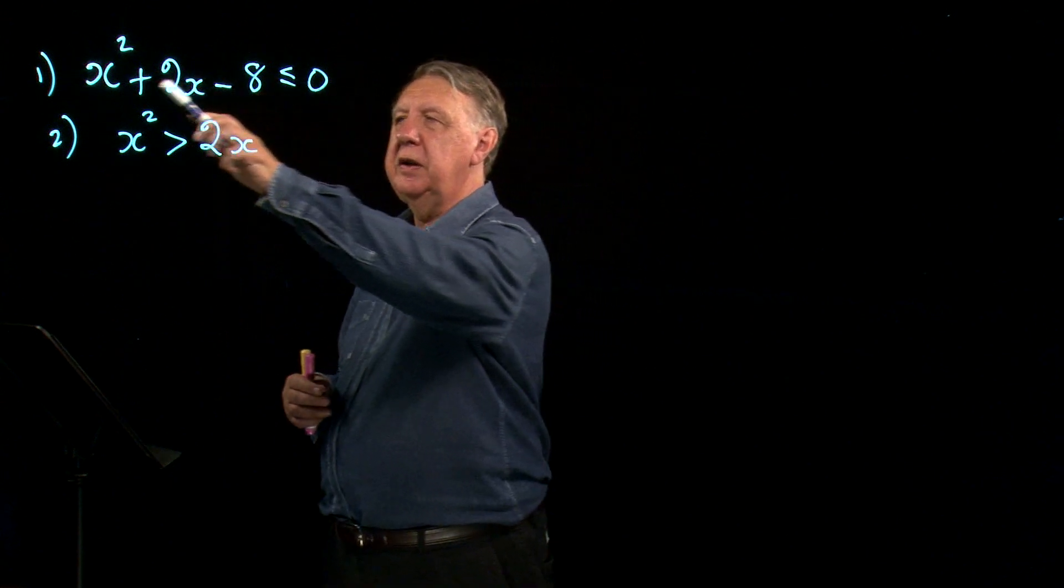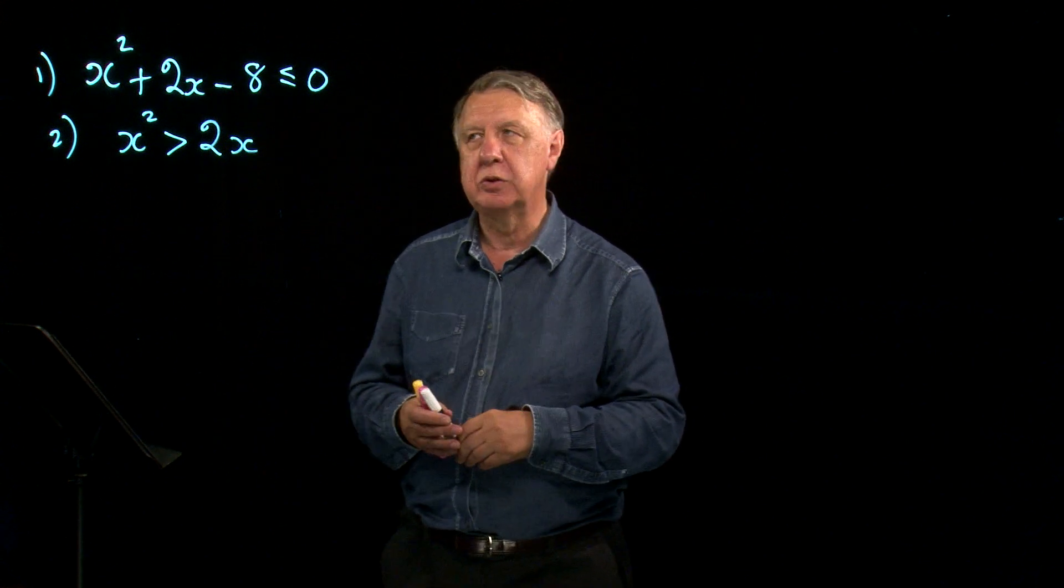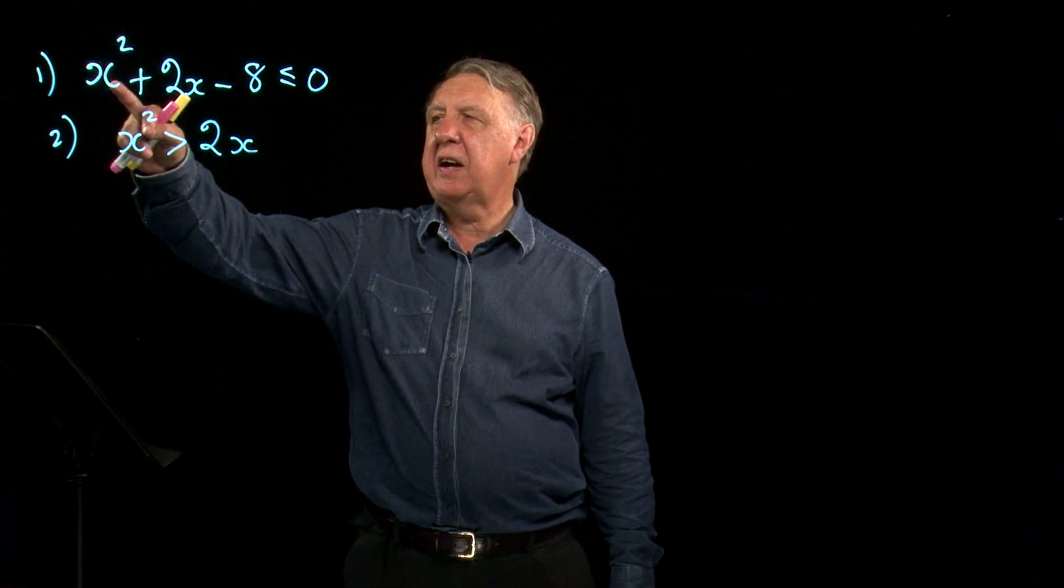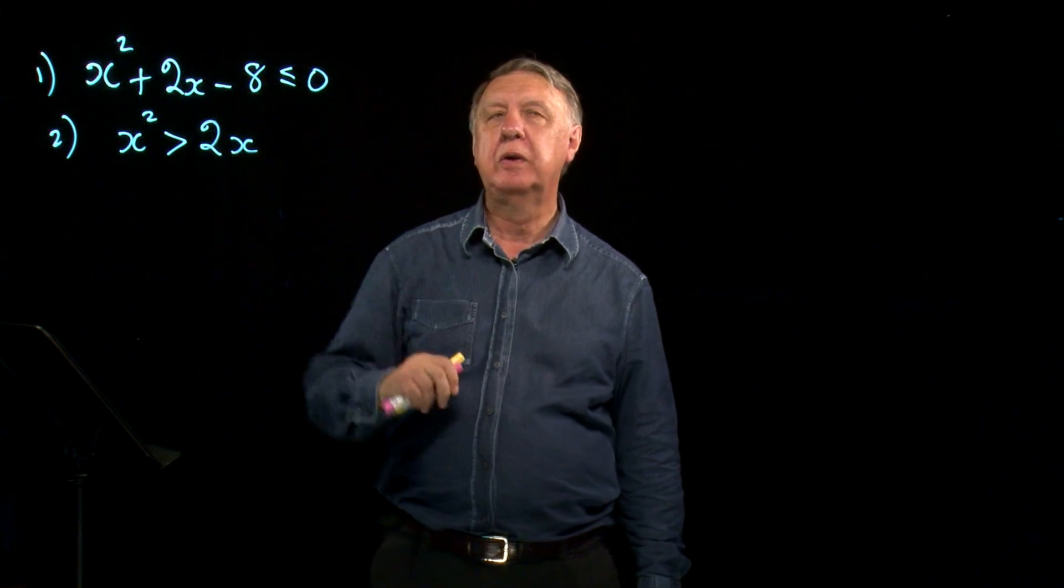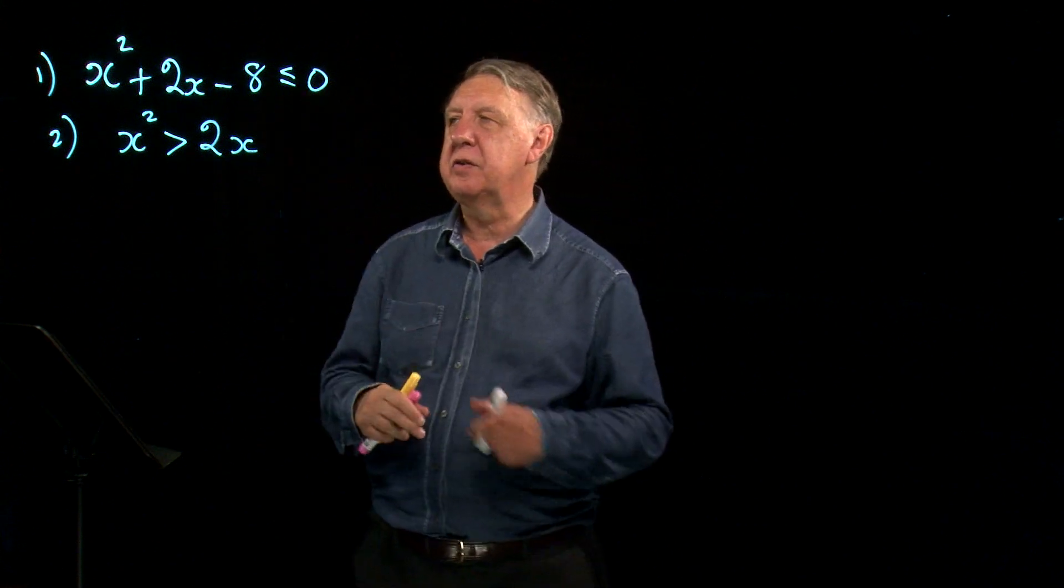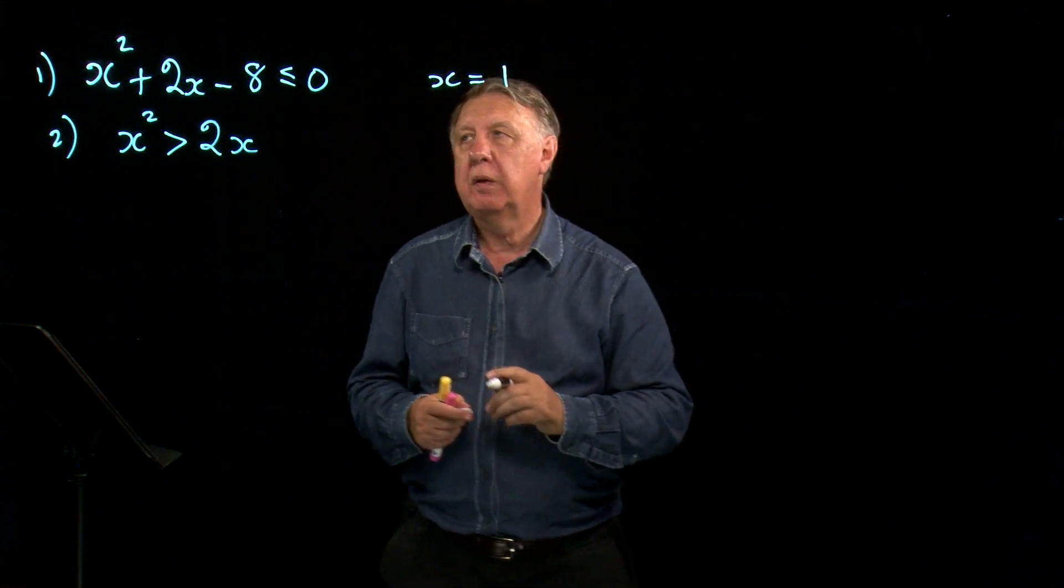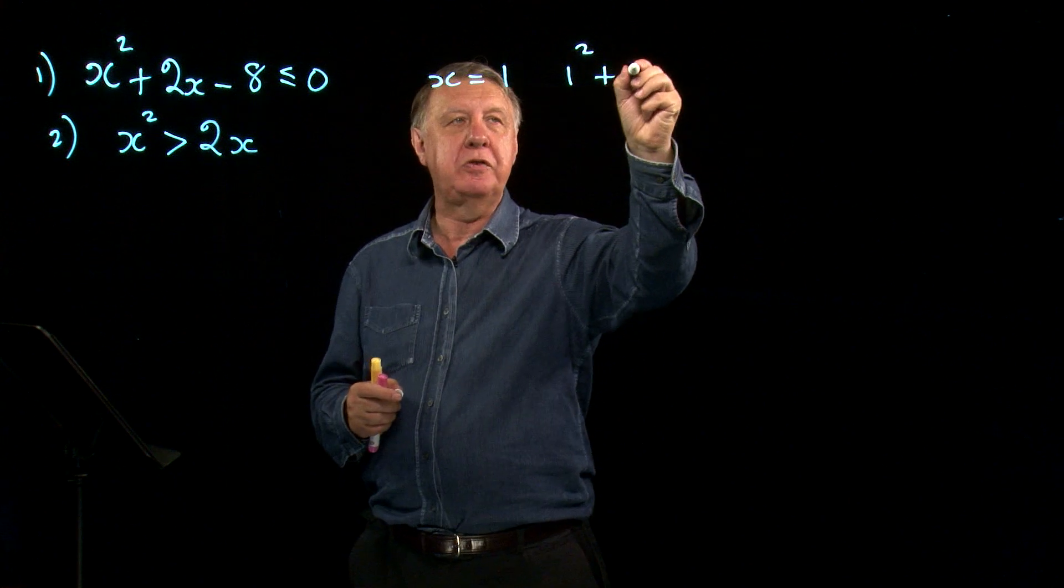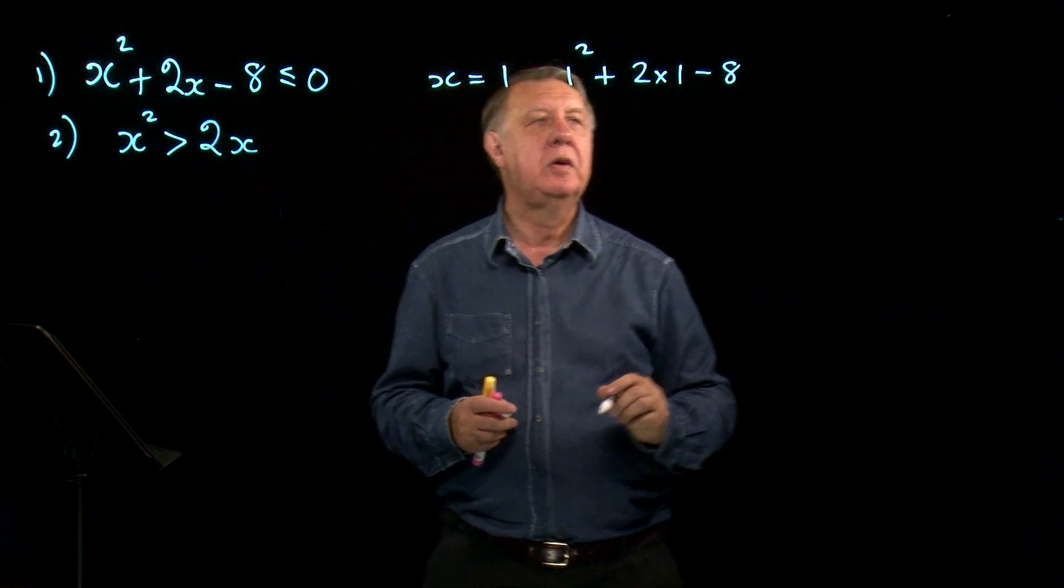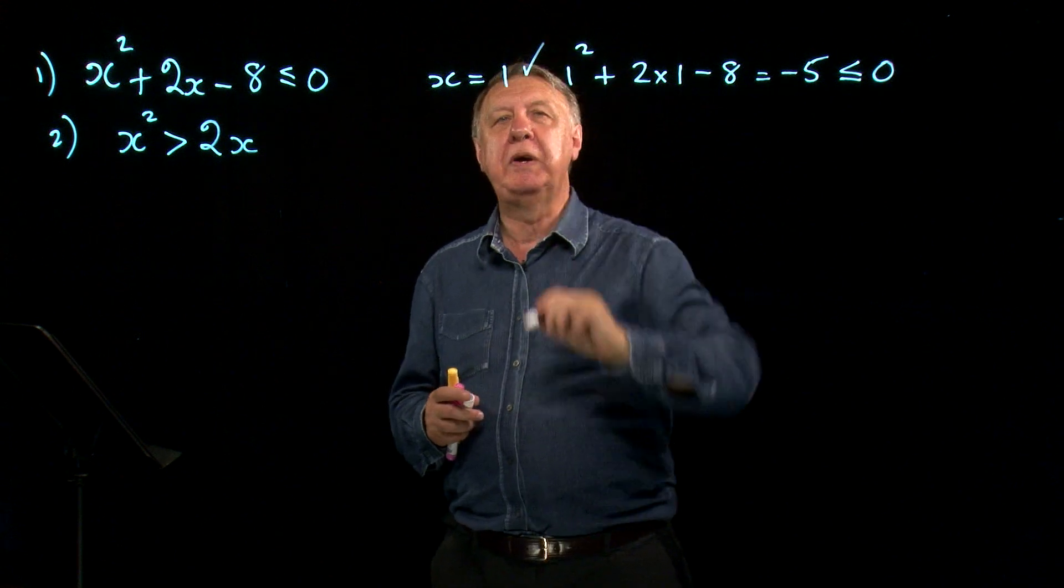Let's look at our first example: x squared plus 2x take away 8 less than or equal to 0. What does that actually mean? It means that whatever x is equal to, if I substitute it into the expression on the left hand side, I will get a negative answer. If I try x equals 1, then 1 squared plus 2 times 1 take away 8 is negative 5, which indeed is less than or equal to 0. So this would be a solution.